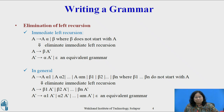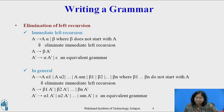First, we group the A productions as A derives Aα1 | Aα2 | ... | Aαm | β1 | β2 | ... | βn, where β1, β2, ..., βn do not start with A. Then we replace the A productions by A derives β1A' | β2A' | ... | βnA', and A' derives α1A' | α2A' | ... | αmA' | ε, which is an equivalent grammar.